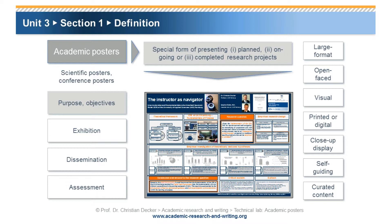They are very visual, printed, or even digital. They are meant for close-up display and close-up interaction with their audience. Academic posters can be self-guiding, in the sense that the viewer can navigate through the poster on their own. Lastly, academic posters are curated content, in the sense that the author selects key information from the research output and visualizes it in the academic poster.